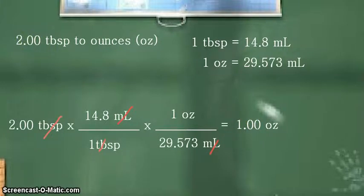So there you have it. 2.00 tablespoon is approximately equal to 1.00 ounces. So that's all for this example. Thank you for listening and continue learning.